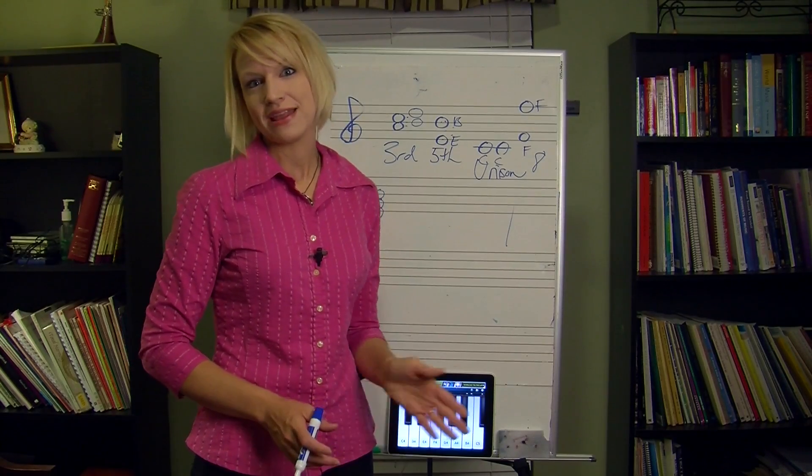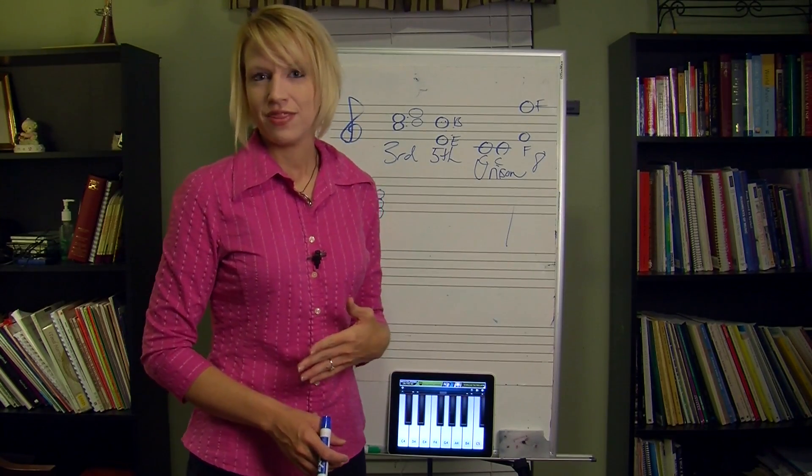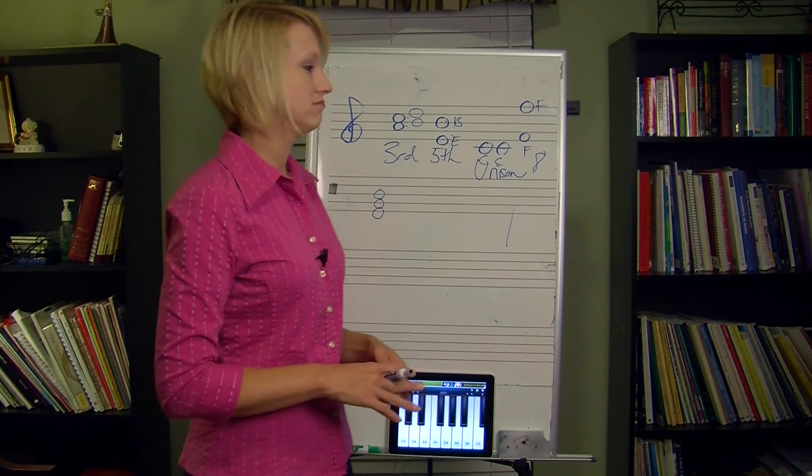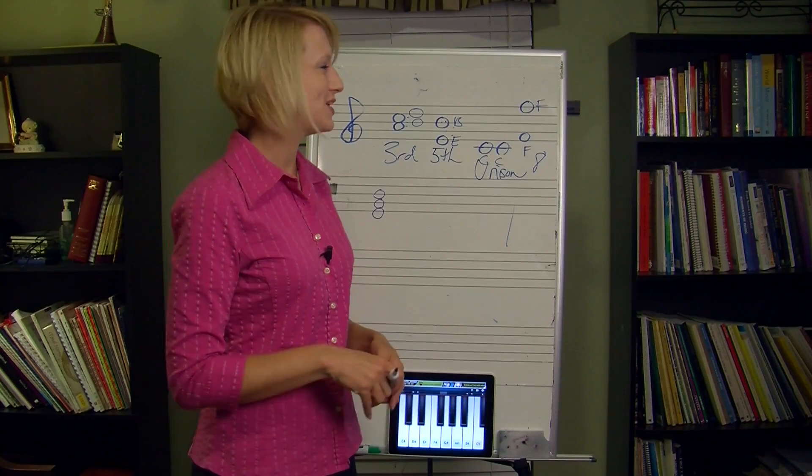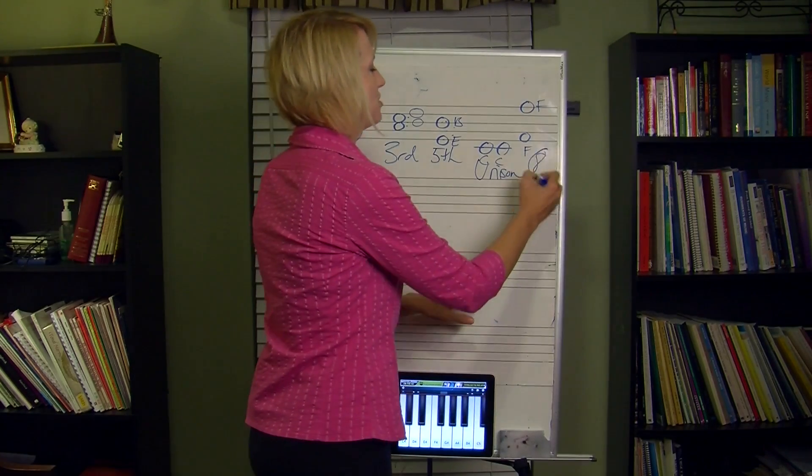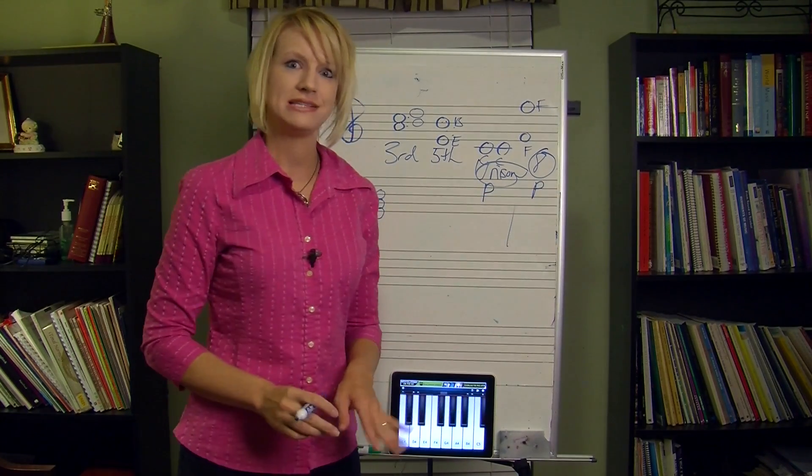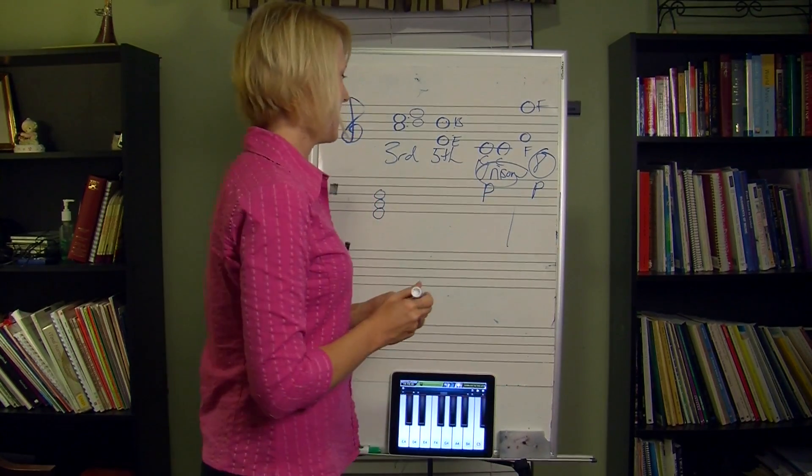And you can remember that, like the prefix or whatever, the OCT. Think about octopus, octagon, eight sides or eight, whatever octopus legs are. Octave is an interval of an eighth. So a unison and an octave. And we're going to learn later that those, we're going to put a P in front standing for perfect. Okay?